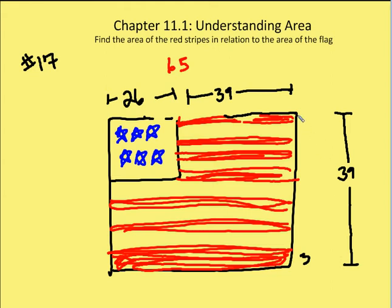We can figure out the width of each of the red stripes because we know that each of the stripes, both the white and the red stripes, are of equal width, and they sum to 39.